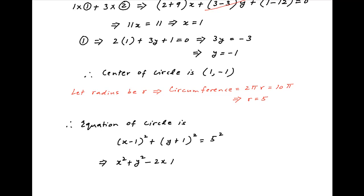This implies that the equation of the circle is x² plus y² minus 2x plus 2y minus 23 equals 0 which is the required answer.